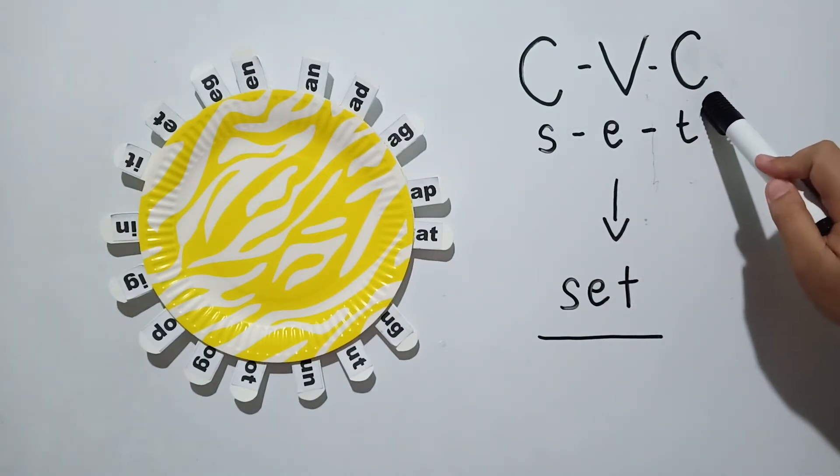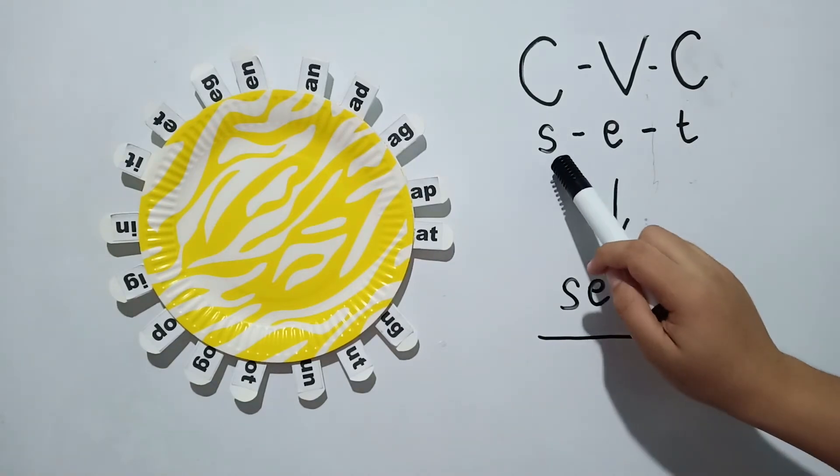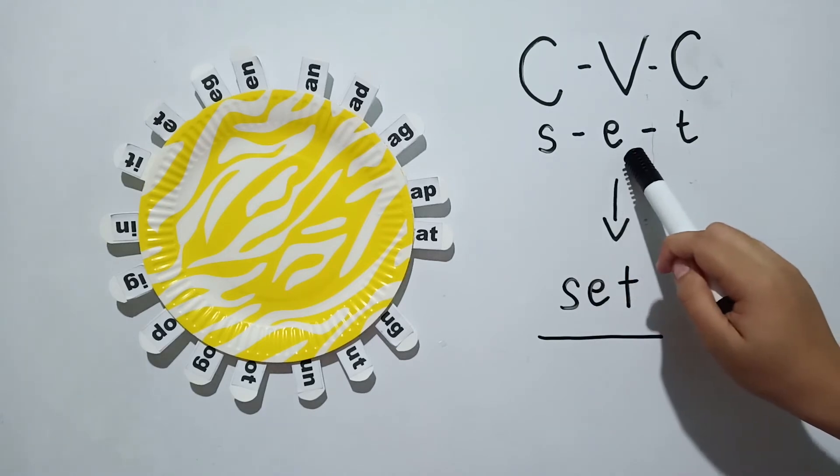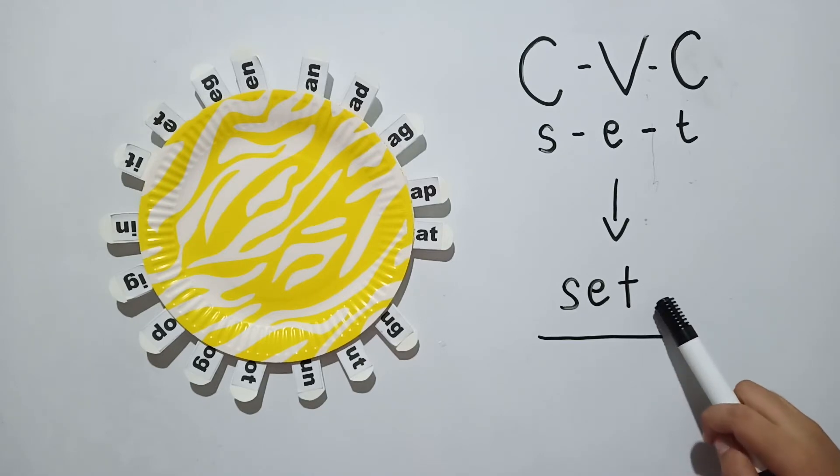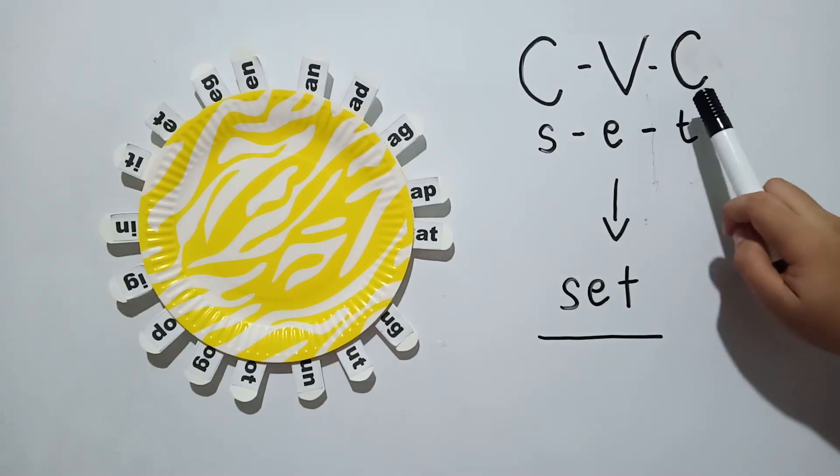CVC words follow a pattern of consonant plus vowel plus consonant, and all together they form basic three-letter words. These words are usually grouped according to their vowel plus consonant ending sounds.